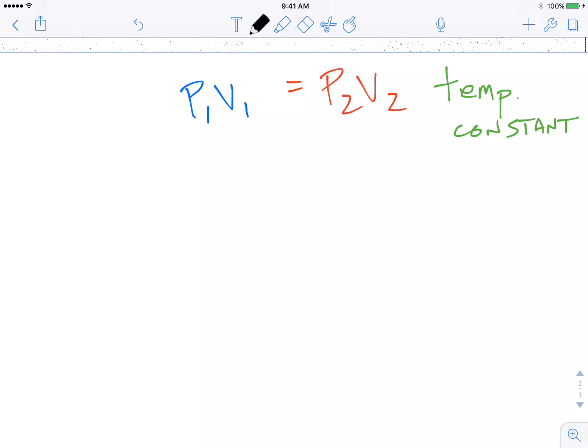Our graph for Boyle's Law would look something like this. Pressure on the y-axis, volume on the x. Sometimes you see these inverted online, but I think this is the proper way of going about it. Then the line that you get is a curve.